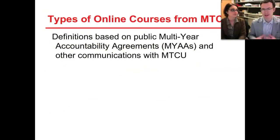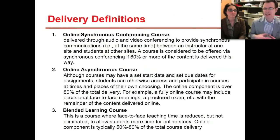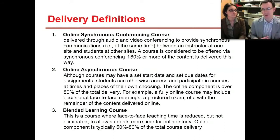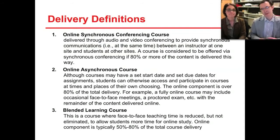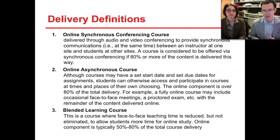MTCU in Ontario defines a number of online courses, and we generally take their definitions for the courses that we're working with. They range from online synchronous conferencing courses — something that has more than 80% online. Because it's synchronous, there could be students and instructors meeting in real time through video conferencing. There's still the option to have that last 20% as a face-to-face component, typically a lab or a face-to-face proctored exam. We consider those to be online and synchronous because of these same-time, real-time meeting moments.